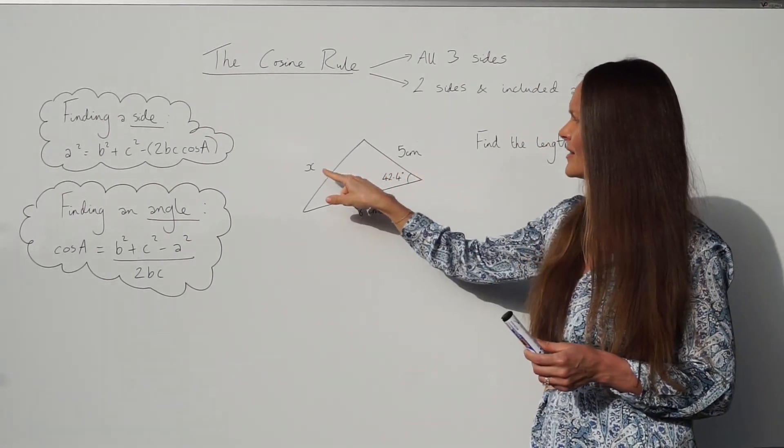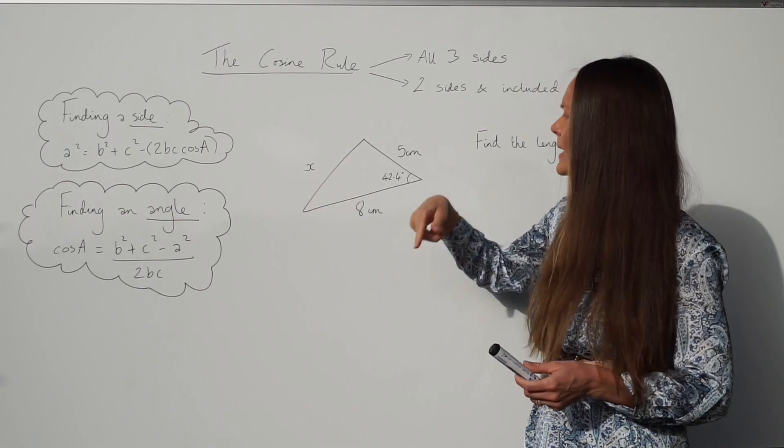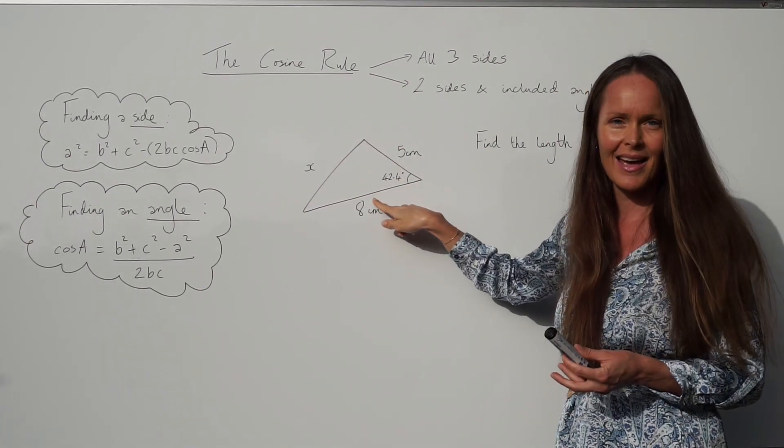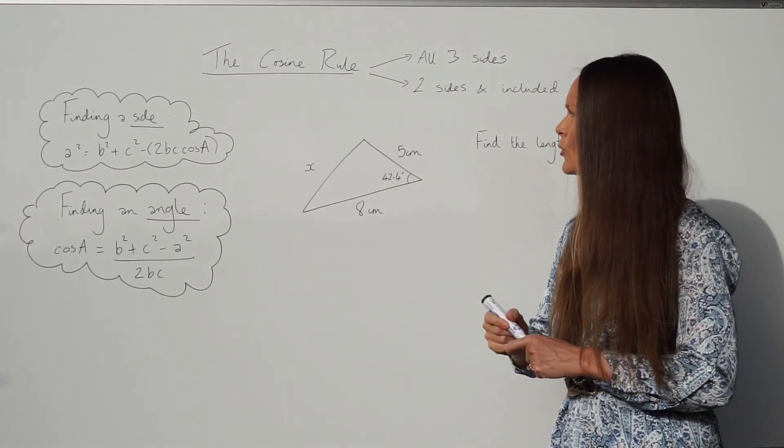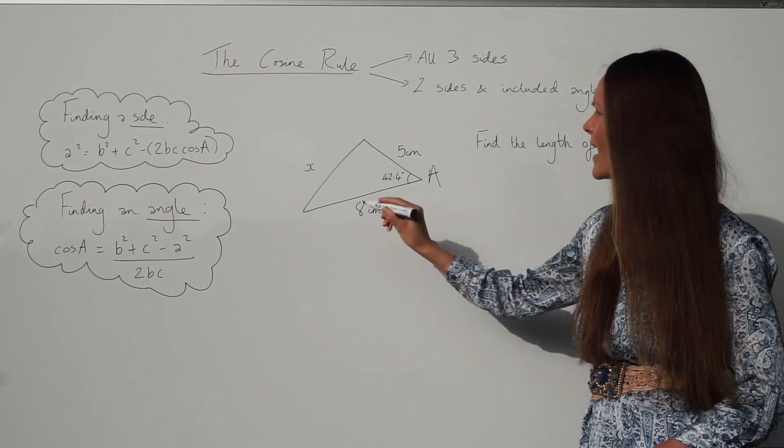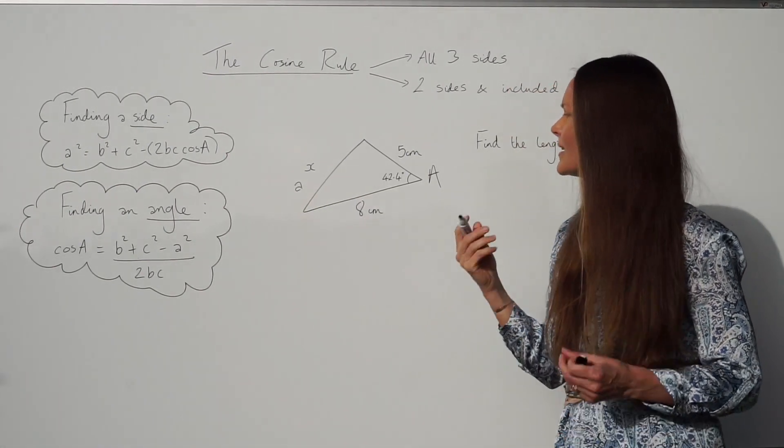So if this is capital A, this is little a. Okay, if this had been the angle capital A, this would be the side little a. Okay, so those ones are important. So I'm going to label those first. So there's the angle capital A and the side which is opposite, little a.